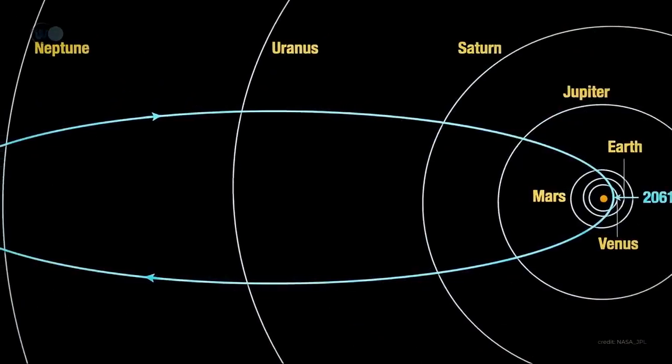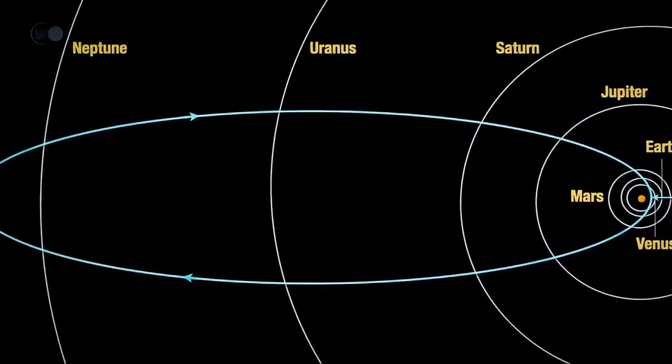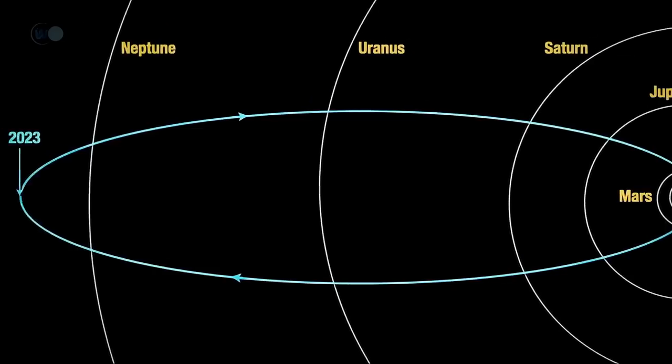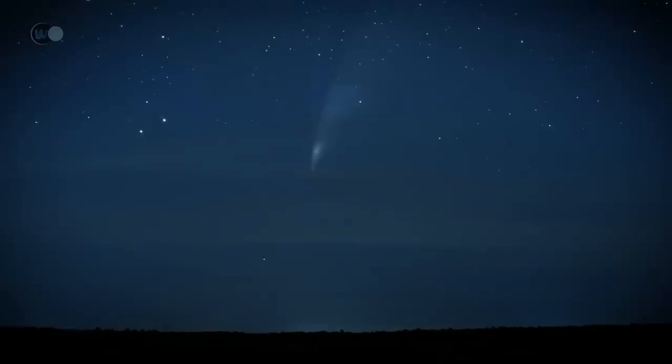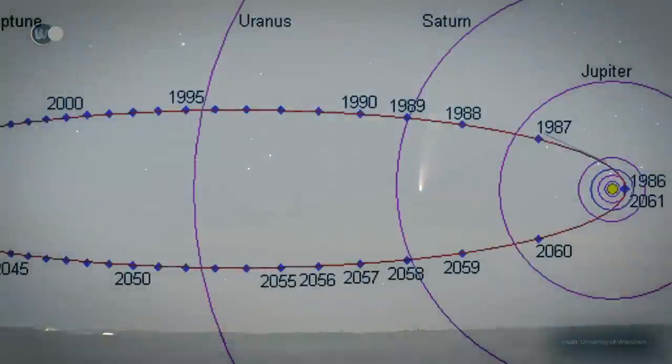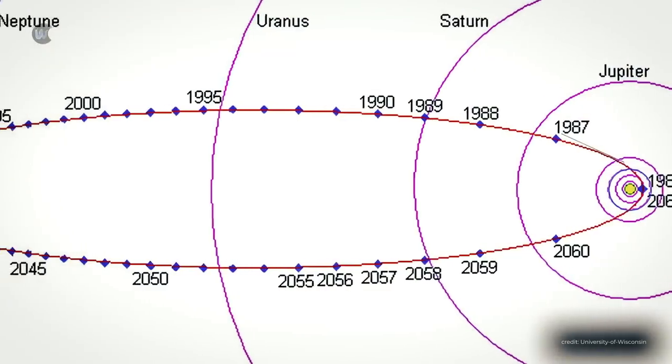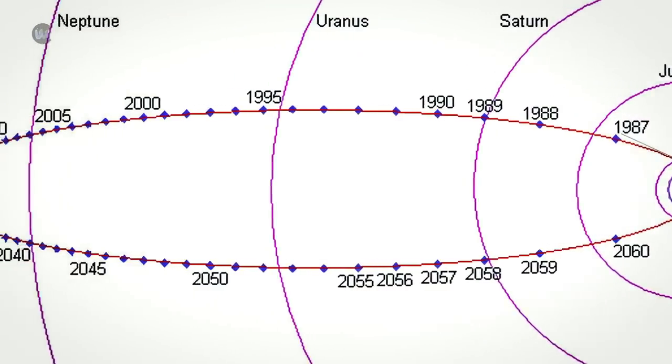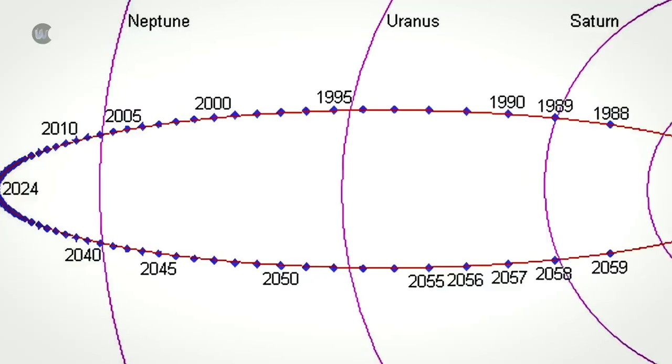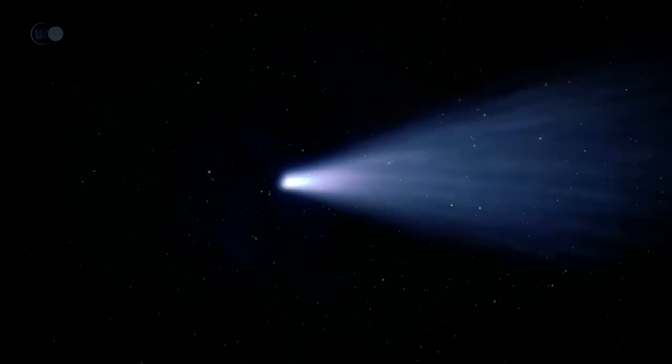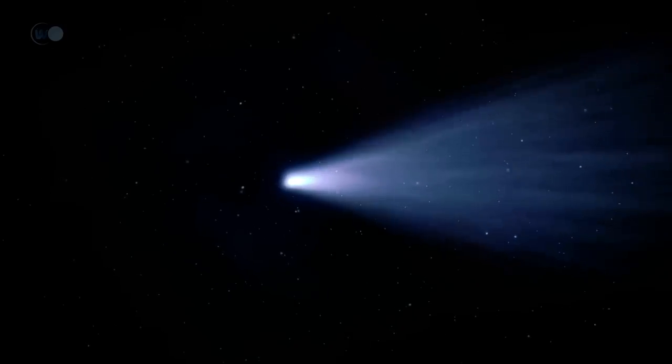If you've already done the math, you've probably estimated that it will make another visit to our neighborhood in 2061. This periodic comet will then be at the perihelion of its elliptical orbit, which brings it only 0.59 astronomical units closer to the Sun, while its distance to aphelion puts it at 35.3 astronomical units further away.